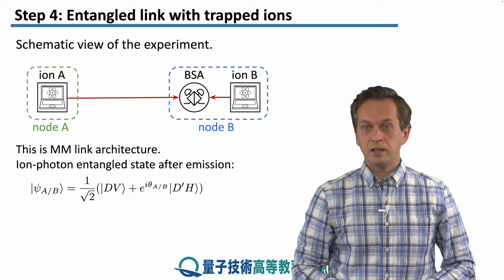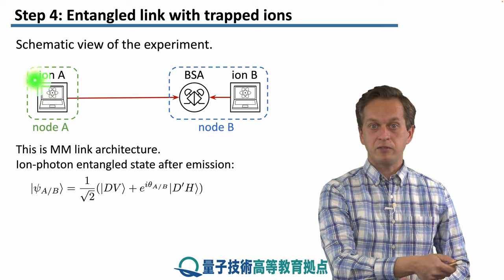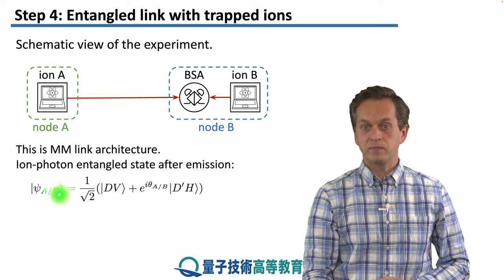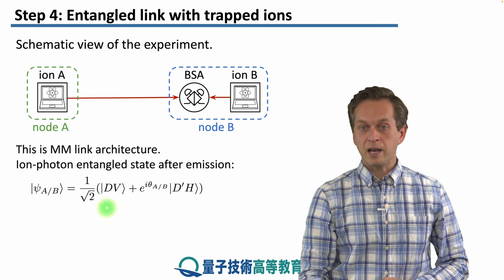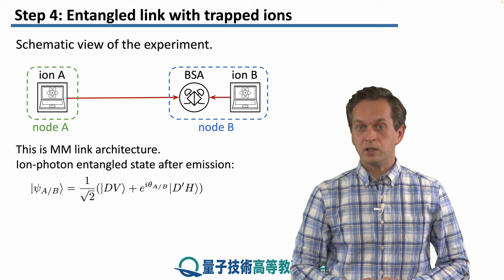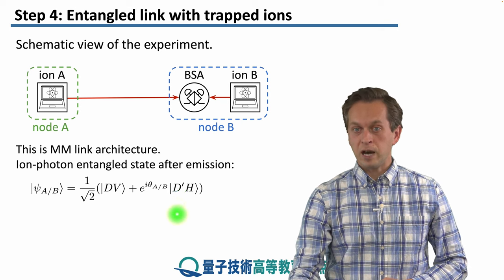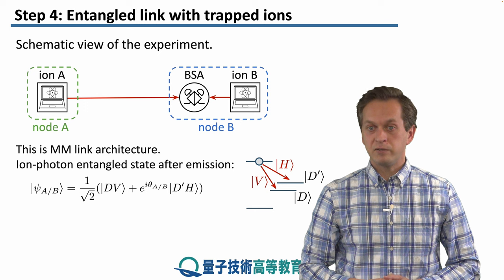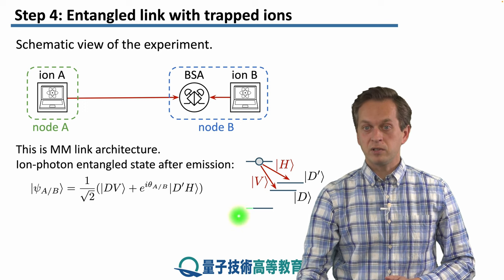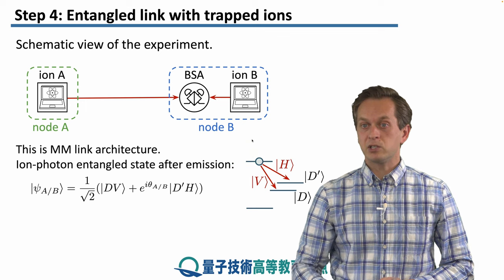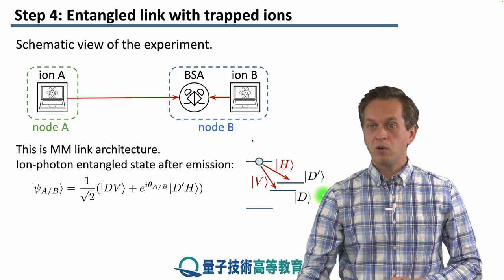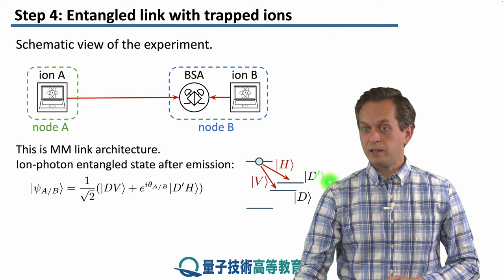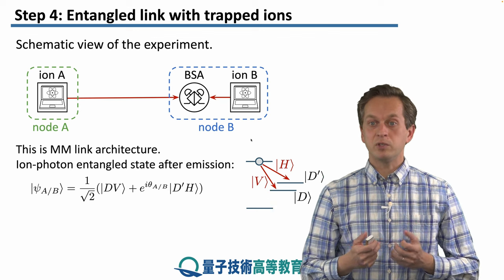The ion-photon entangled state after the emission — after both A and B are made to emit a photon — is given by the following superposition. It's a superposition between the ion being in state D with the photon vertically polarized, or the ion being in state D' with the photon horizontally polarized. Here is a simple energy level structure for the ion: the ion is excited into an excited level, from where it can de-excite into either level D or D'. When it de-excites into level D, it emits a vertically polarized photon; if it de-excites into D', it emits a horizontally polarized photon.